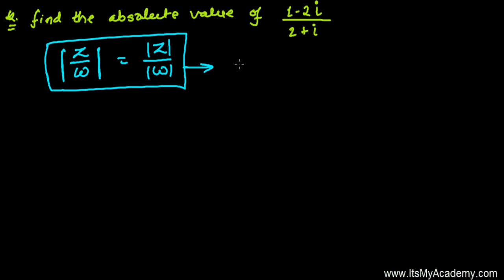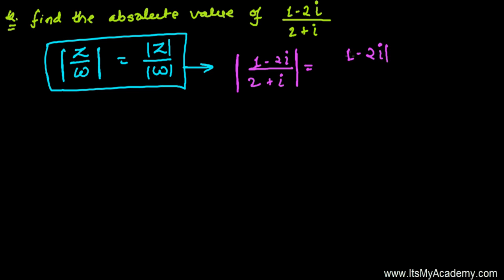We're going to use this property here. In this case, our question is (1 minus 2i) divided by (2 plus i), where i represents iota, and we're going to find out the absolute value of this. So it's going to be the absolute value of (1 minus 2i) divided by the absolute value of (2 plus i).